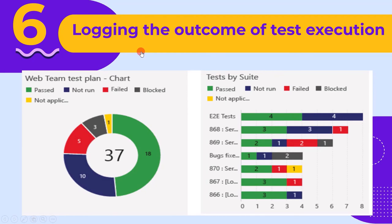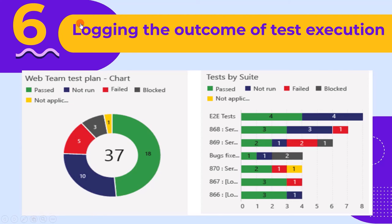The sixth main activity is logging the outcome of test execution. During test execution, we also log the outcomes. For example: how many tests passed, how many failed, how many tests didn't run, several tests not applicable for this release, and so on.